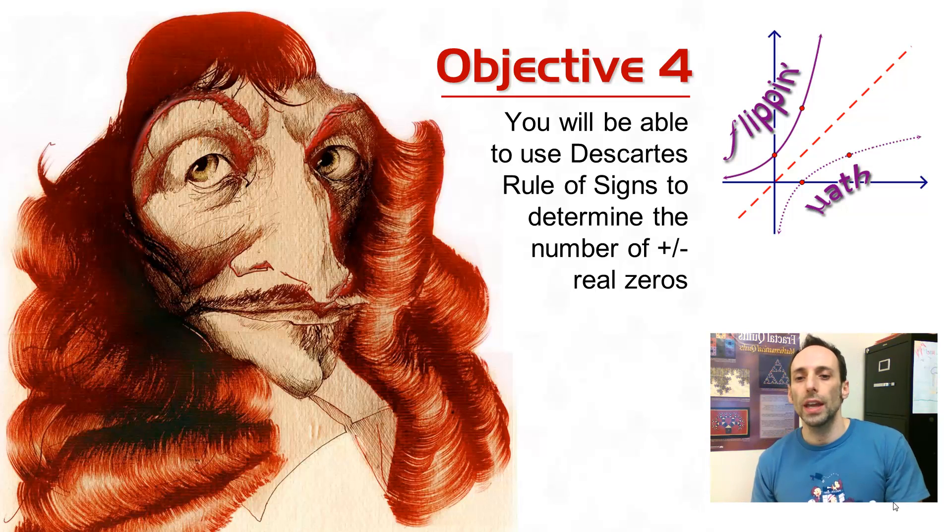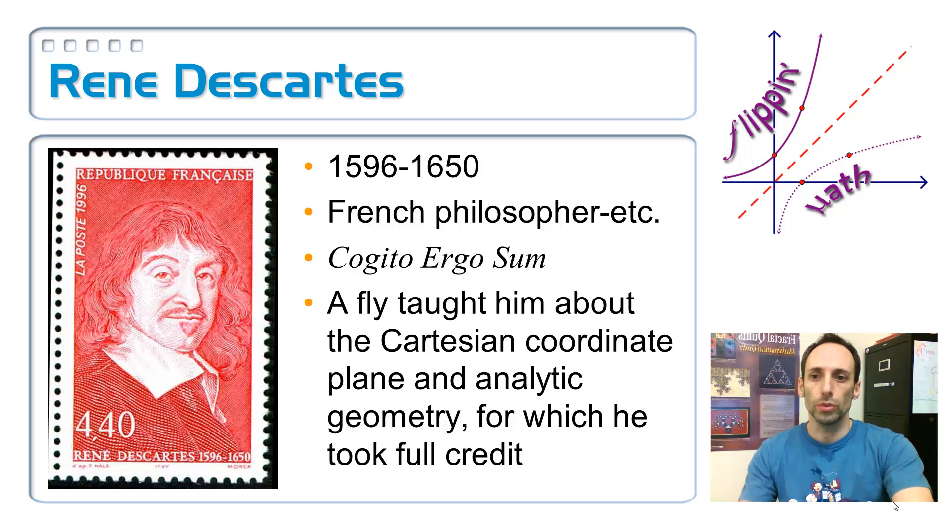All right, so in the picture there, there's a caricature, a sketch of Descartes. You can see that he had a very pronounced nose and quite a fantastic mustache there. So, he's on here because that's, I mean, it's his rule, right?